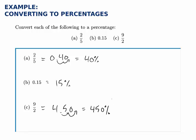So what we notice is that numbers less than 1 correspond to a percentage less than 100, and numbers greater than 1 correspond to a percentage greater than 100%.